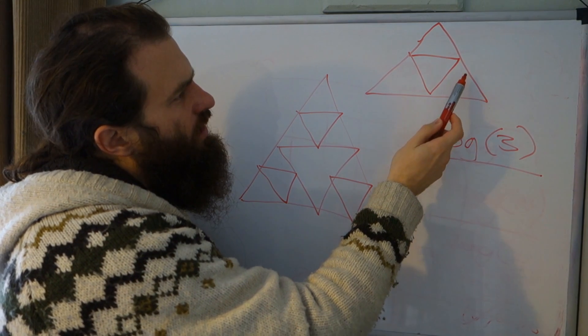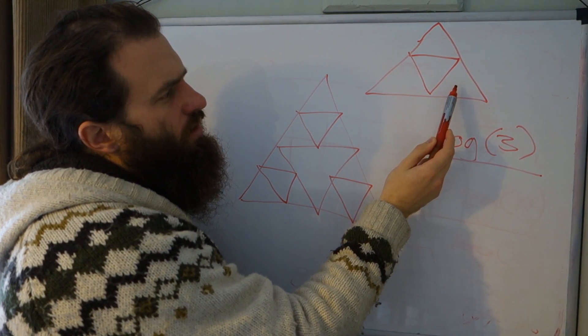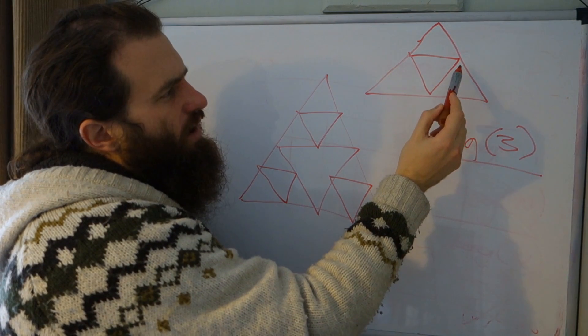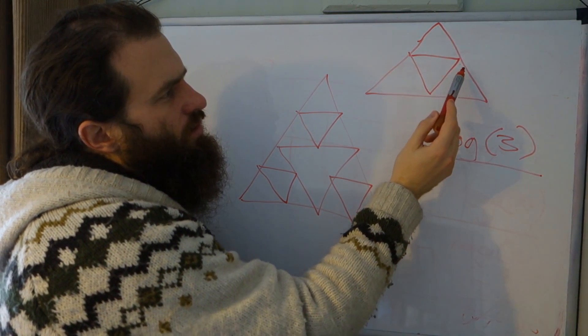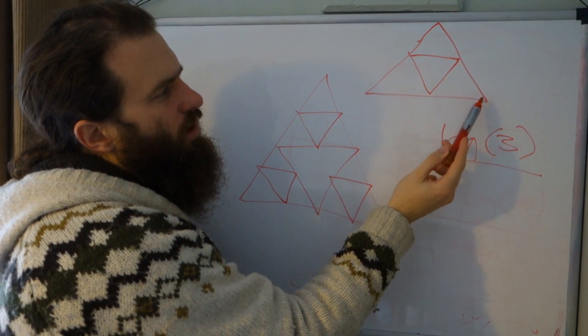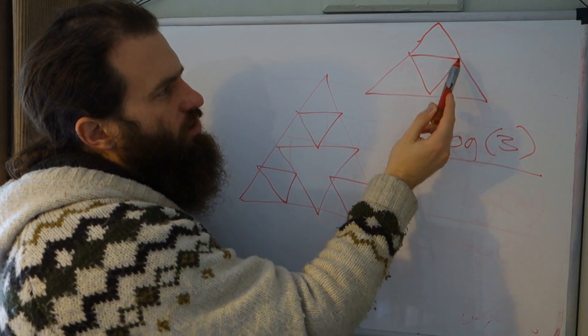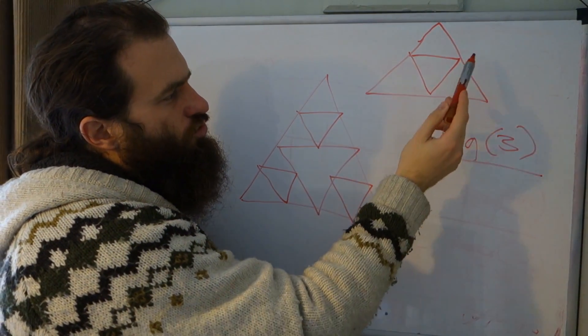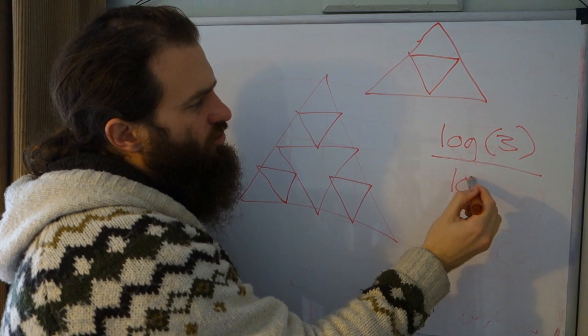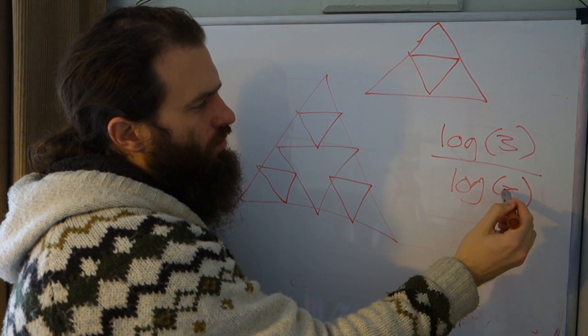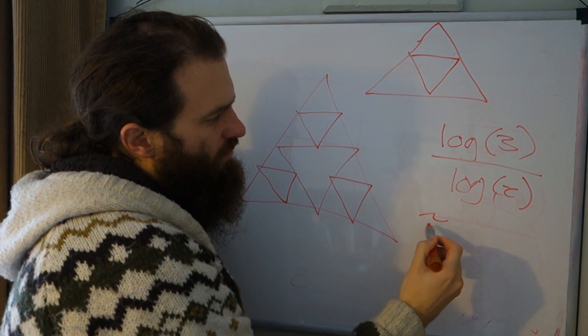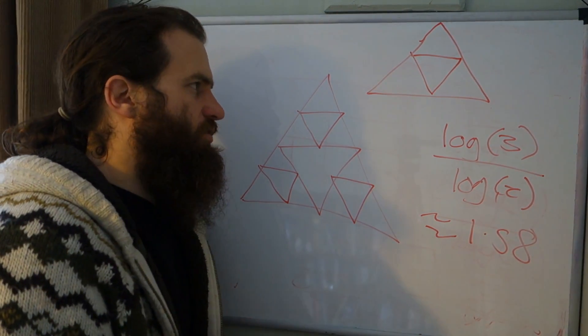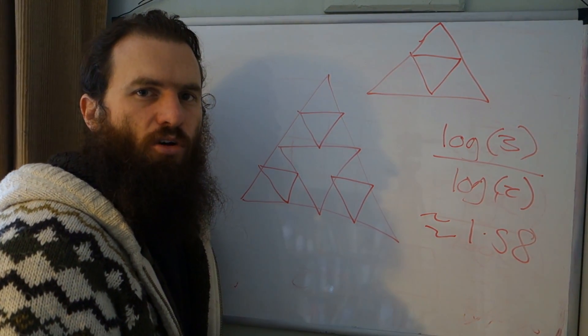And what is the magnification factor for each piece? Well, if you look at this triangle, each of its sides has been reduced by 2. It's been halved. So we'd multiply this triangle side by 2 and we'd get the original triangle back. So the magnification factor is 2. So that gives us 1.58, which is the fractal dimension of the Sierpinski triangle.